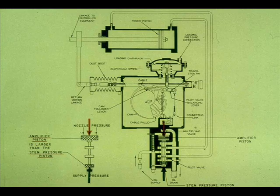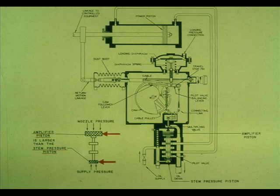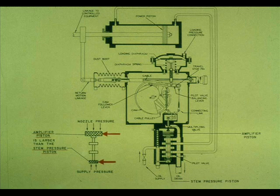Here you can see the two forces that act upon the pilot valve. The variable pressure is from the multiplying valve. The constant pressure is the supply pressure acting on the stem pressure piston. Notice that the amplifier piston area is larger than the stem pressure piston. This is why a small force on the amplifier piston can make the stem pressure piston lower.